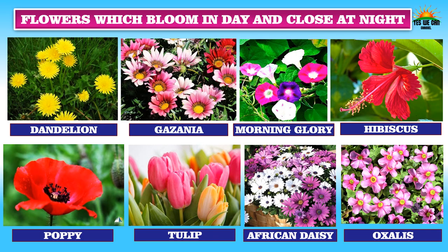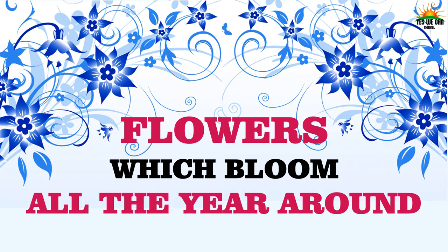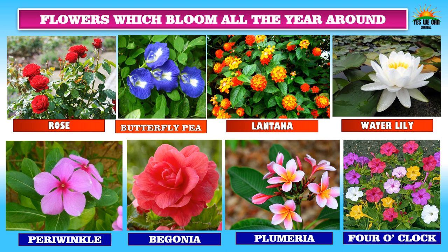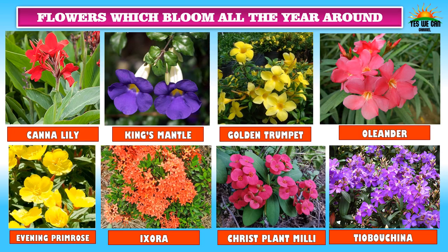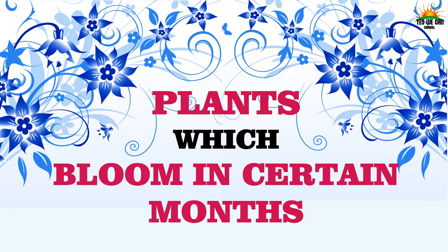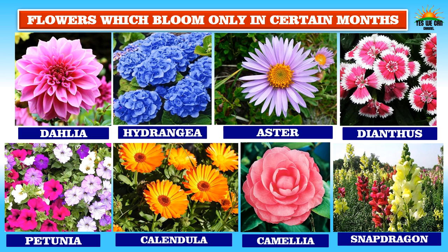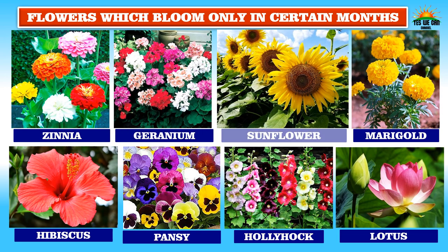Now let's find some flowers which bloom in the day and close at night: dandelion, gazania, morning glory, hibiscus, poppy, tulip, African daisy, and oxalis. Some flowers bloom all year around: rose, butterfly pea, lantana, water lily, periwinkle, begonia, plumeria, four o'clock, canna lily, king's mantle, golden trumpet, oleander, evening primrose, ixora, Christ plant, milli, and tubo china. Some plants bloom only in certain months: dahlia, hydrangea, aster, dianthus, petunia, calendula, camellia, snapdragon, zinnia, geranium, sunflower, marigold, hibiscus, pansy, hollyhock, and lotus.